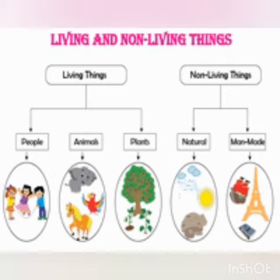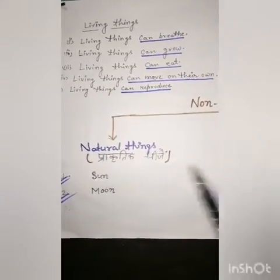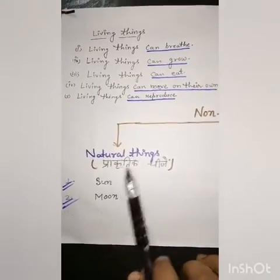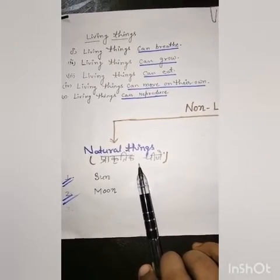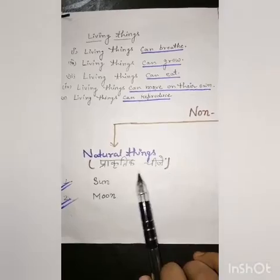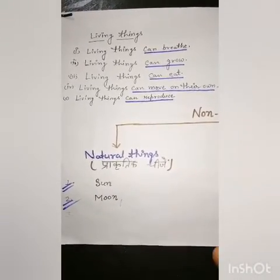Non-living things are of two types. The first is natural things and the second is man-made things. Natural things — yani ki prakritik cheezein — things that are found in nature are called natural things, such as sun, moon, clouds, and mountains.